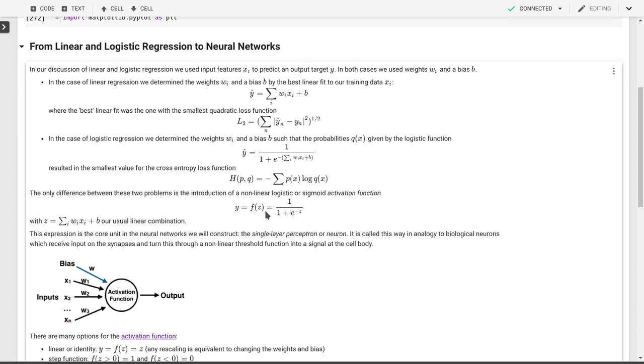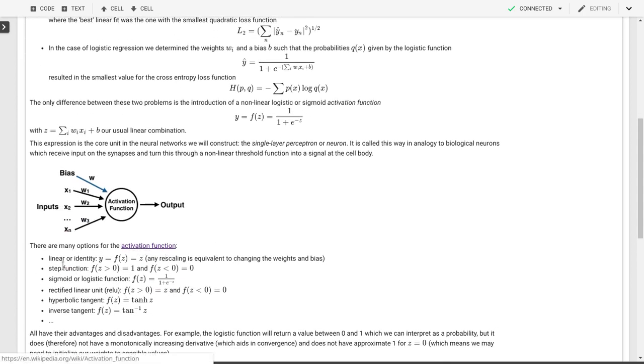This is the so-called single layer perceptron or just a perceptron or a neuron. It's similar to how neurons work in biology. They have lots of inputs that come in through the synapses, and then there's an activation function that is actually a very similar looking step type function that is continuous like the sigmoid function. And that produces output in the cell body. So that's the core of what we'll be using.